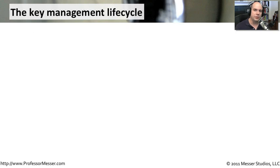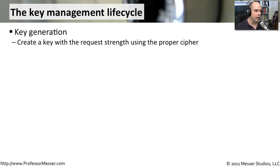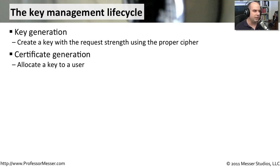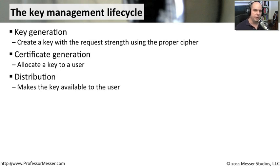In a public key infrastructure, there is an entire life cycle that revolves around the keys. Where we start is creating the key — choosing a particular cipher and a particular key strength or key size. We then create a certificate, allocate that key to a person, bind those together, and create the X.509 certificate that includes the key and all of those other details mentioned in our previous video.